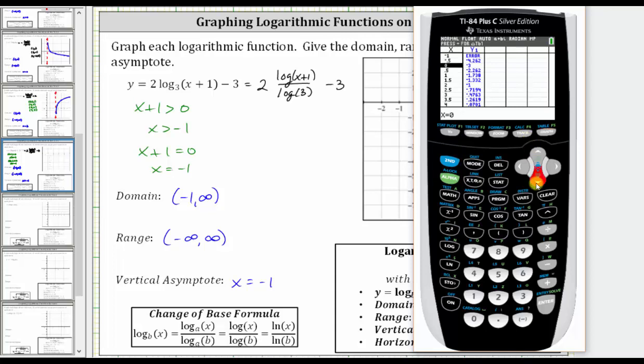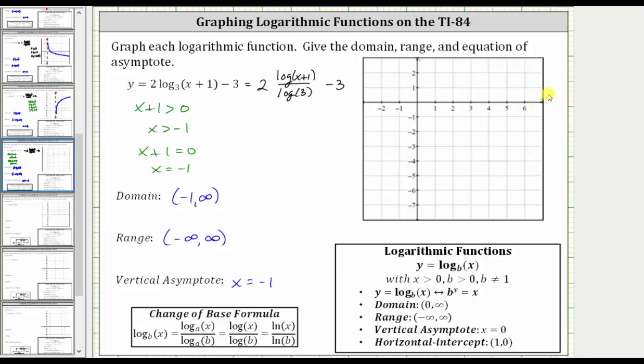And now we want to find convenient points that we can use to graph the function. For example here, we have zero comma negative three. Here we have two comma negative one. And there aren't any other convenient points here, except eight comma one, but looking at our coordinate plane, it only goes out to seven.